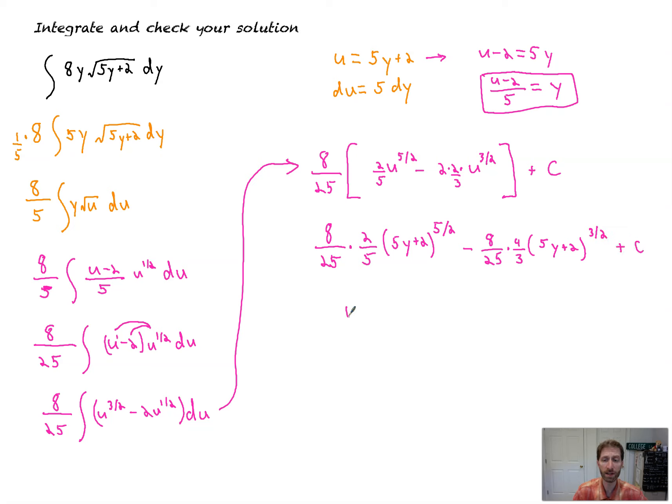So, almost done here. 8 times 2 is 16 over 125, 5 times 25, times 5y plus 2, all that to the 5 halves. Minus. This is 32 over 75. Of course, why not have 32 75ths, right? Everybody's favorite fraction. Sure. 5y plus 2, all to the 3 halves, plus C. And that heinous answer is it.